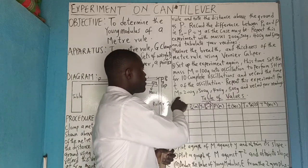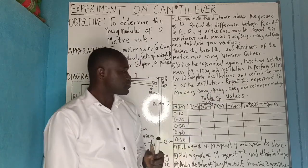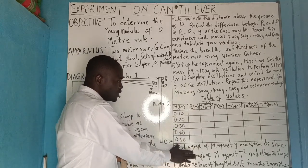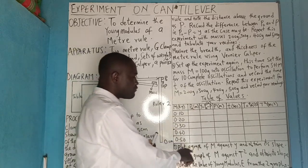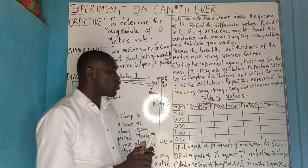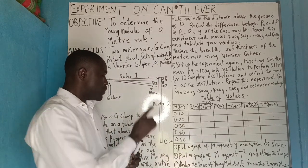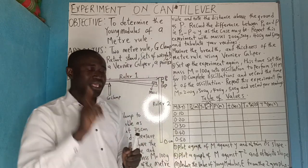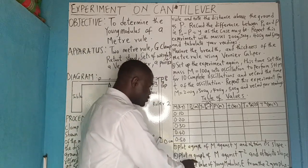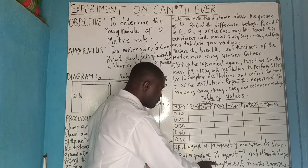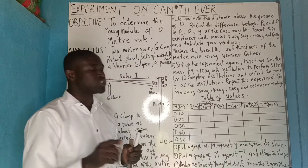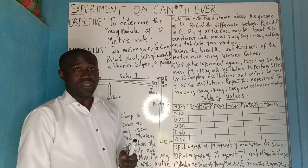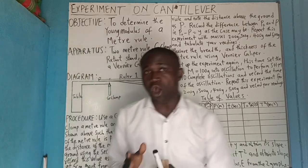After doing this experiment, plot a graph of M against Y and obtain the slope. Plot a graph of M against T-squared and obtain the slope. Deduce the value of Young's modulus from the two graphs.